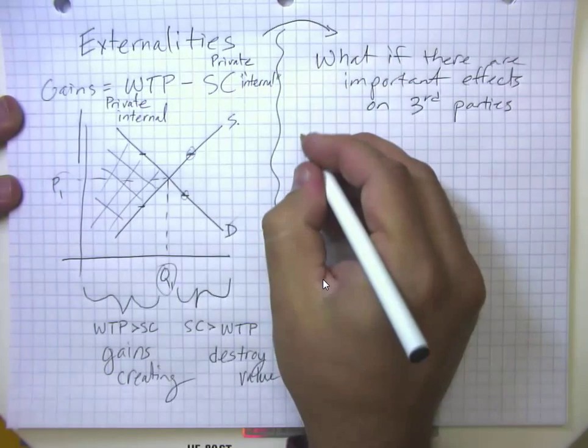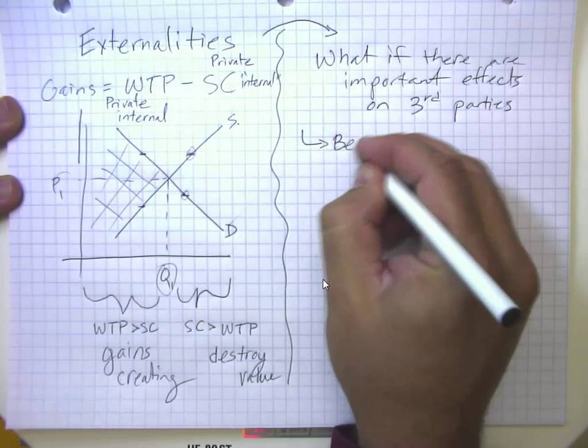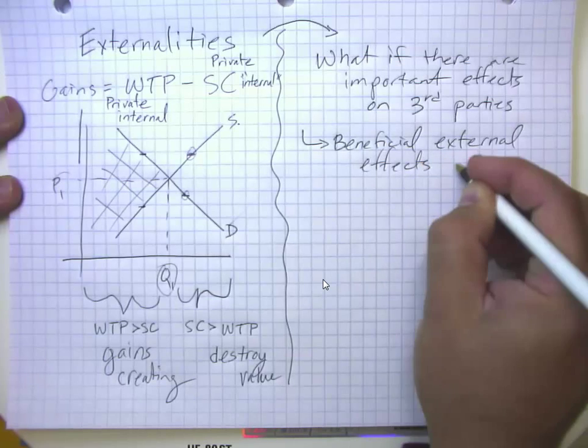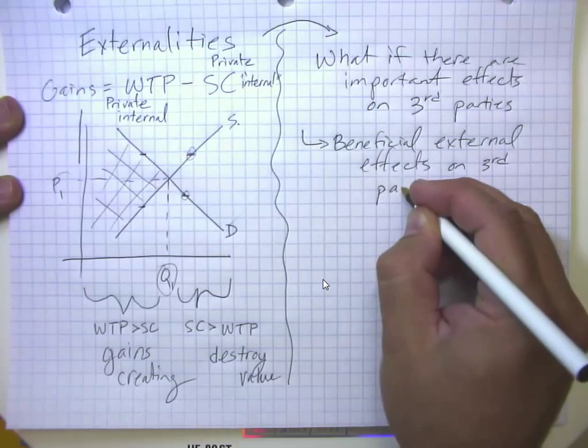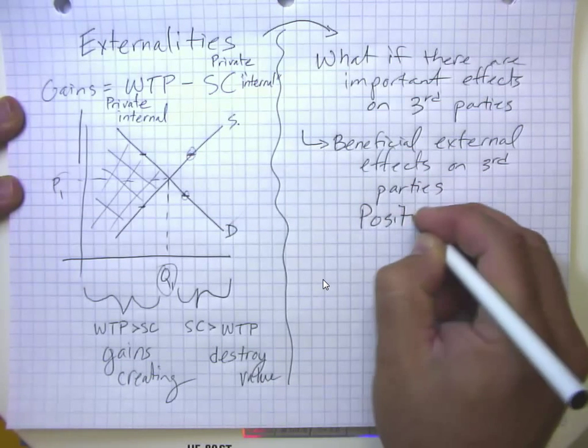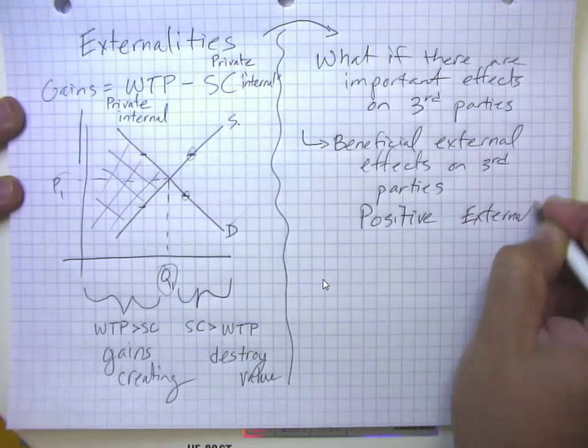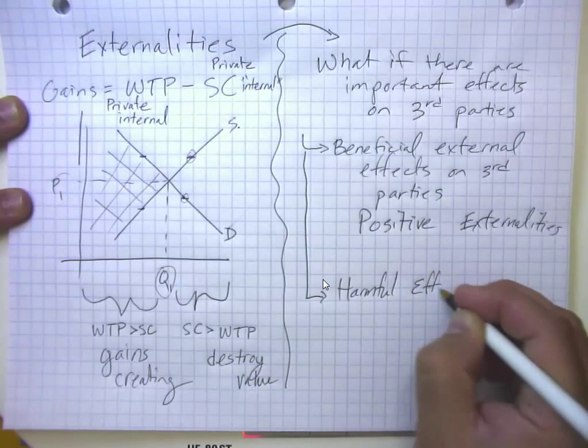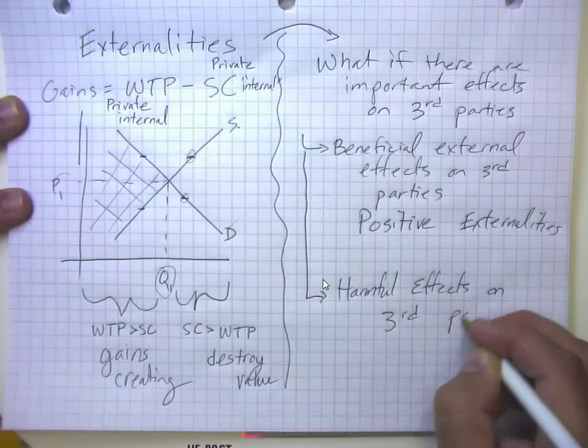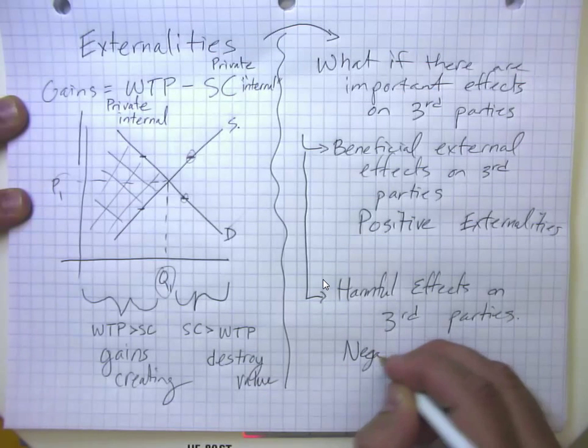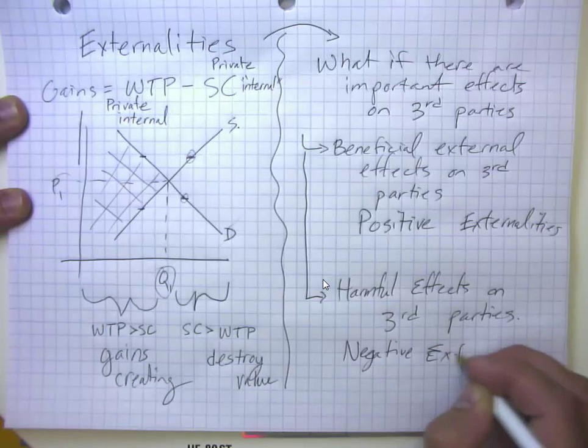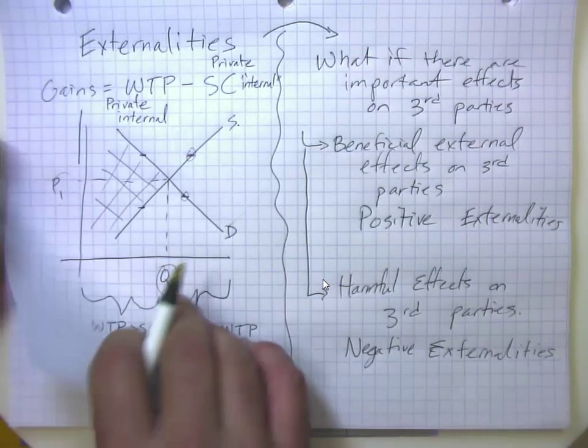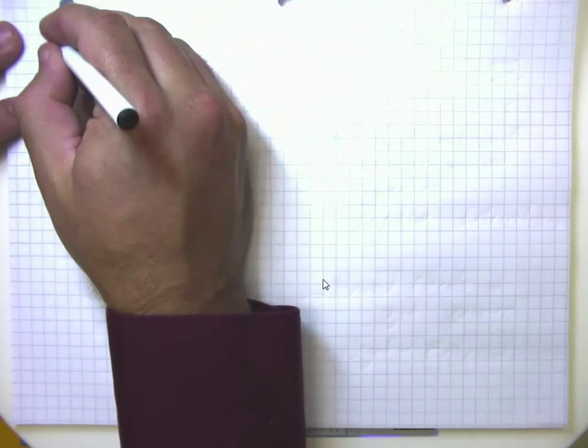And in particular, we can think about there might be beneficial external effects on third parties, what we call positive externalities, or there might be harmful effects on third parties. So in those cases, what's the situation going to look like? Well, if we have a situation of beneficial externalities or positive externalities...